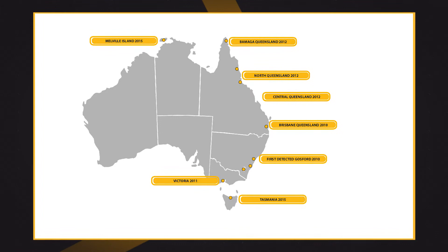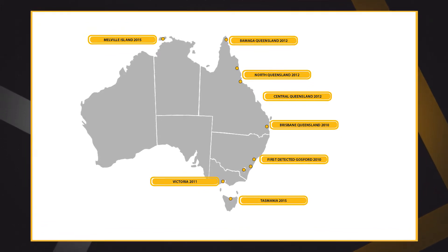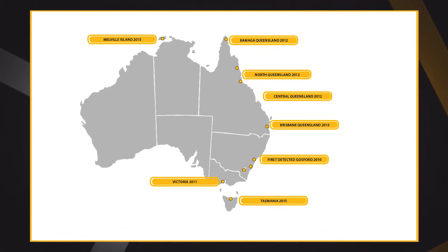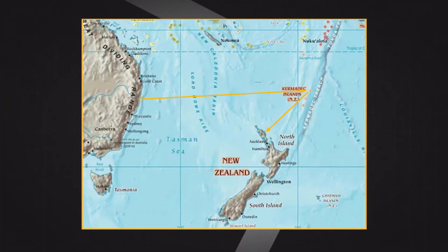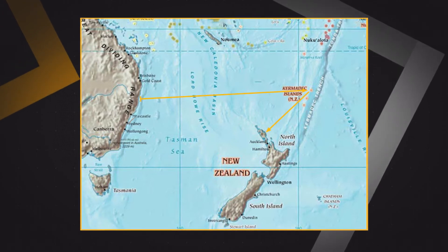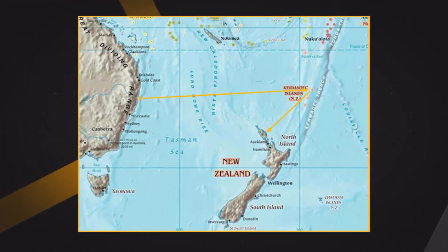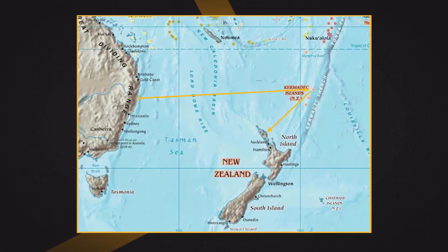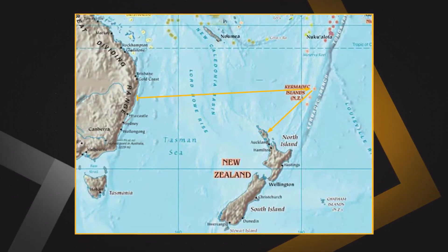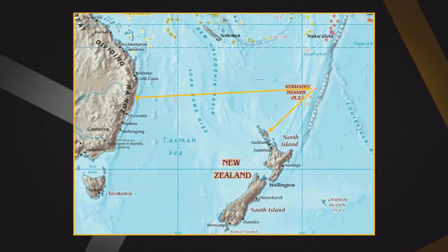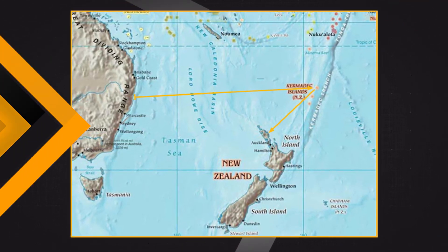Myrtle rust was first recorded in Australia in 2010 and was expected to arrive in New Zealand eventually via wind, insect, bird, or human movements. Unfortunately, it was detected in New Zealand in March 2017 on the Kermadec purukawa trees on Subtropical Raoul Island, part of the Kermadec Island chain. In May 2017, it was found for the first time on the New Zealand mainland in Northland, in a Kerikeri nursery.